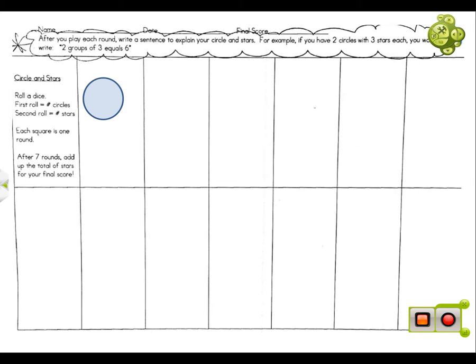Your second roll is going to be for how many stars you're going to put in the circle. You rolled a two, so two stars go in the circle. That was your first round.